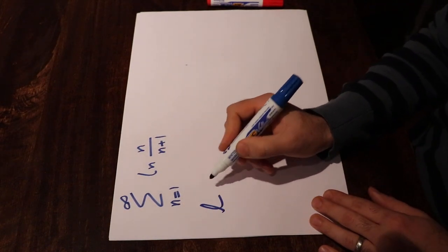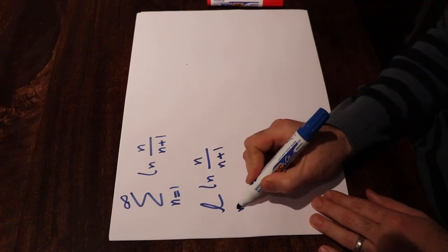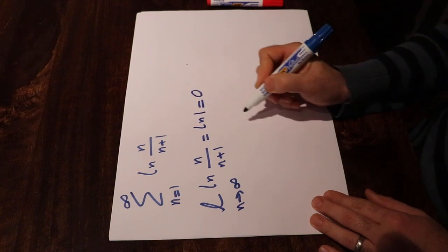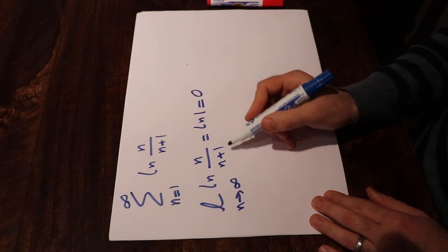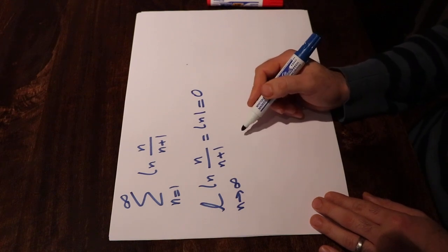If you calculate the limit of ln n divided by n plus 1 when n goes to infinity, that will be equal to ln 1 equal to 0. If you don't know how to calculate this limit, you can leave me a comment in the comment section and I will show you how to do that.